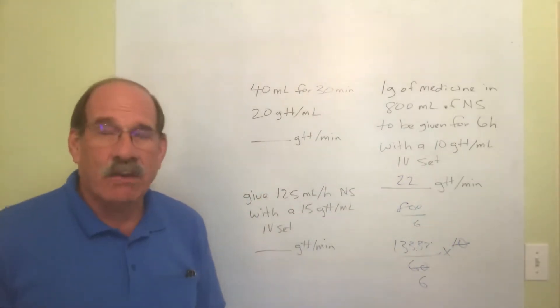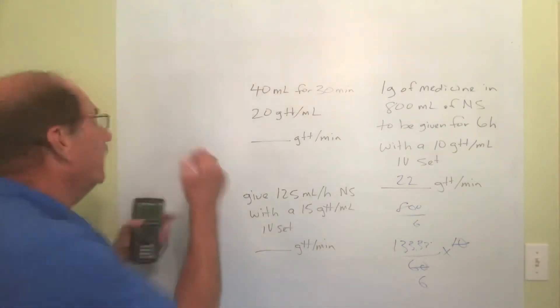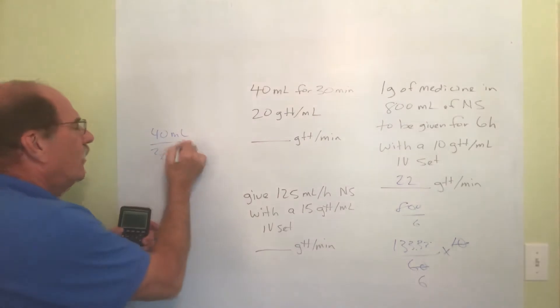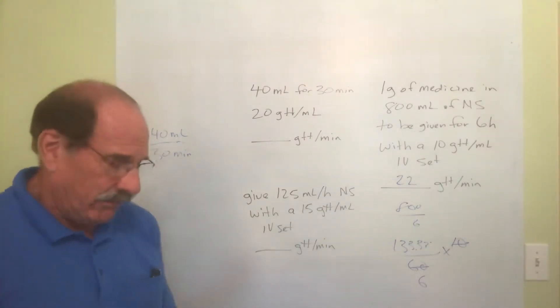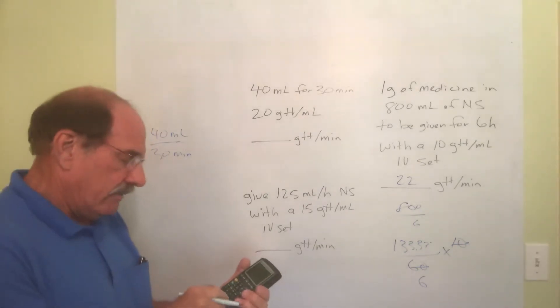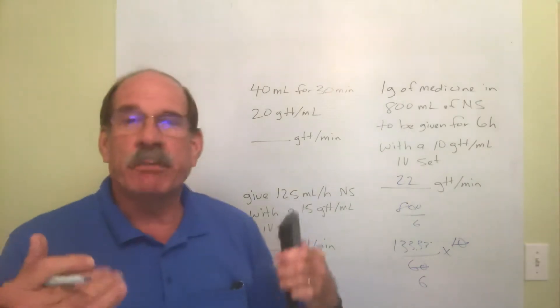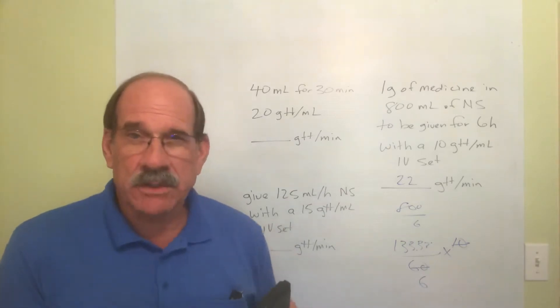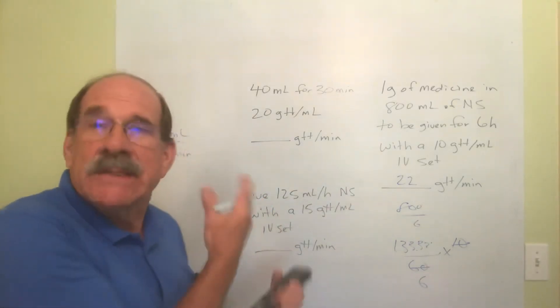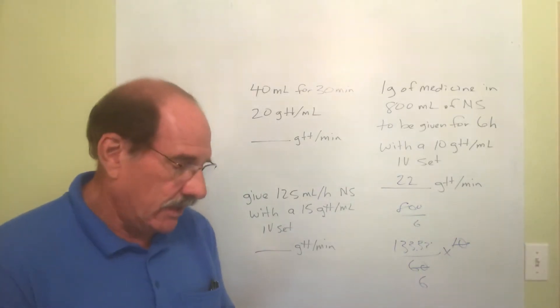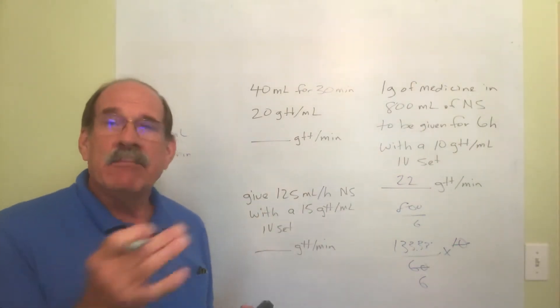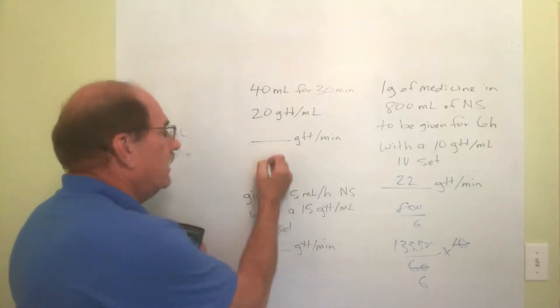I still need to know the milliliters per hour. How do you do this when it's less than one hour? If you take the milliliters, 40, and divide by the minutes, 30, that's the milliliters per minute. That's 1.33, but that's milliliters per minute. I need milliliters per hour. So multiply that number by 60 - times 60, and that's 80. I did all that just to find V in my formula. V is the number 80.